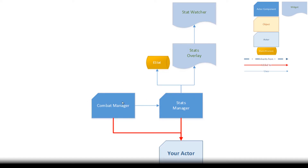We also have another actor component: the combat manager. The blue arrows in the diagram mean that one box is using another. So the combat manager can use the stat manager. Plugging a combat manager to your actor gives you access to many new combat features like combat floating text, damage type, armor mitigation and more. The combat manager can be automatically paired with a stat manager to read values and react — such as when health goes down to zero.